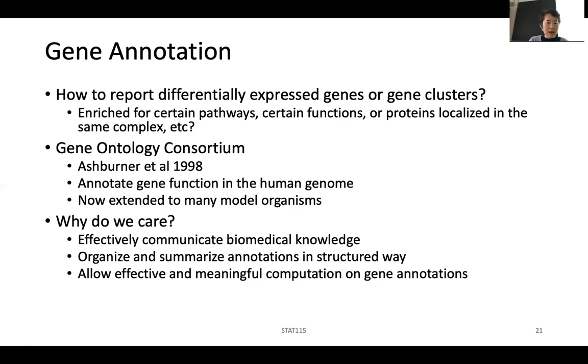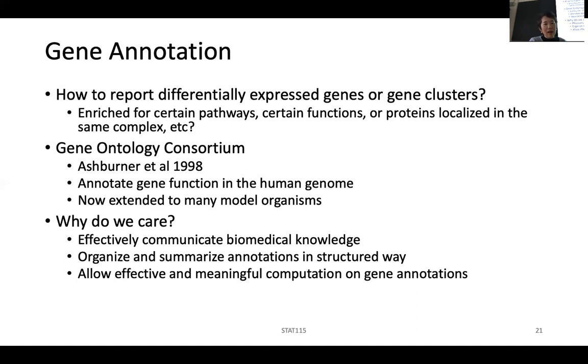So the reason we care is that this way you can effectively communicate biological knowledge. You can also organize and summarize these annotations in a better structured way. And the most important thing is you can allow effective and meaningful computation on the gene annotations. So after you got the 300 genes, if each gene is annotated with a code, at the end, you can look at all of this code and say, all of these genes are related to certain pathways or certain functions. And so based on this, the gene ontology consortium decided to annotate the genes in the following way.